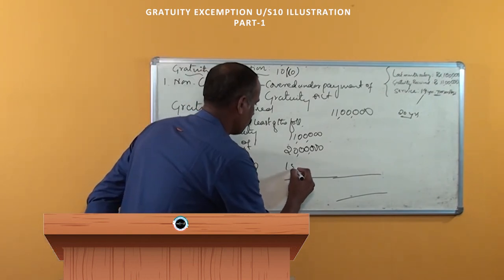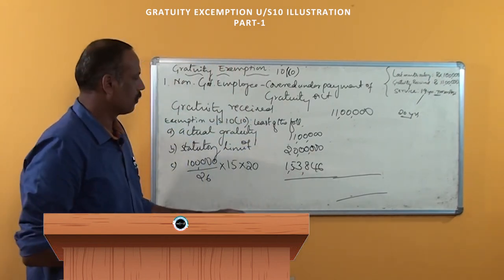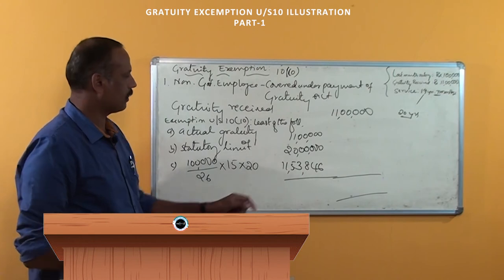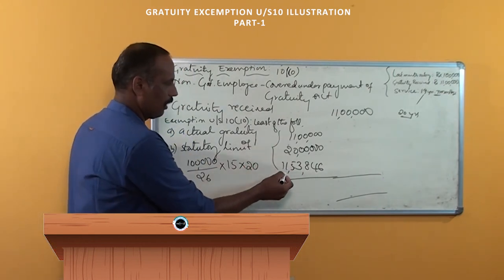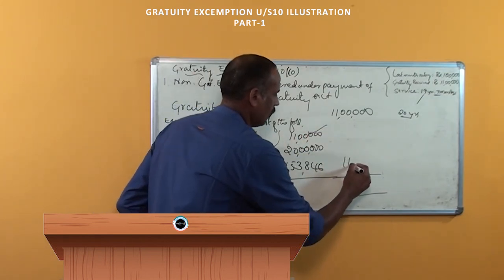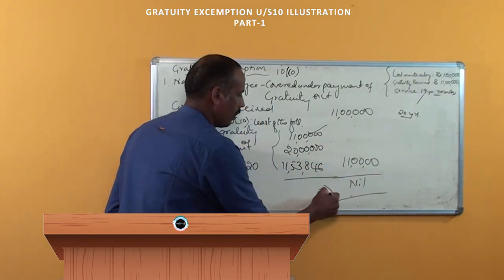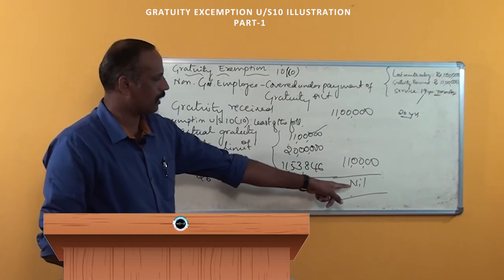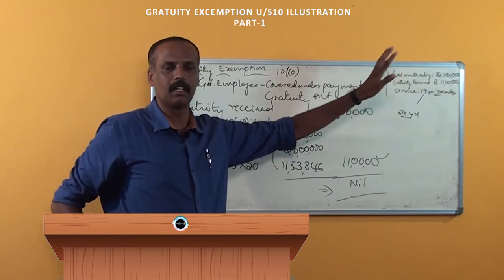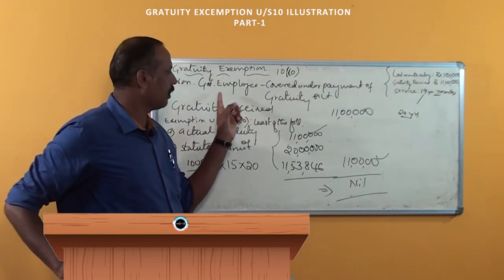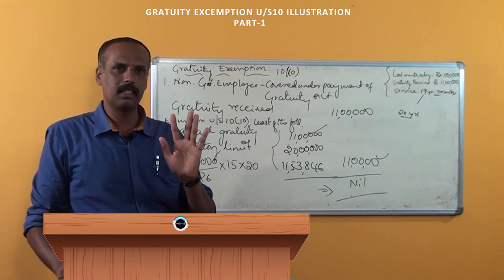The amount comes to rupees 11,53,846. So out of the three amounts — 11 lakh (actual gratuity), 20 lakh (statutory limit), and 11,53,846 — the least amount is 11 lakh. Therefore, exempted gratuity is 11 lakh and taxable gratuity is nil. Entire amount received as gratuity is exempted because even though he is a non-government employee, he is covered under the Payment of Gratuity Act and the 15 days salary calculation yields a higher figure.